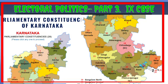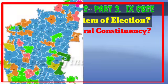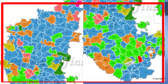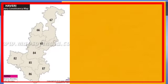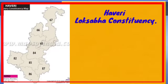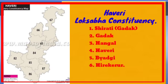Each constituency is made with almost equal population and a favorable geographical area. Similarly, a state is also divided into assembly constituencies. For example, Karnataka is divided into 224 assembly constituencies. A parliamentary constituency includes many assembly constituencies — for example, the Haveri Lok Sabha constituency of Karnataka comprises eight assembly constituencies.